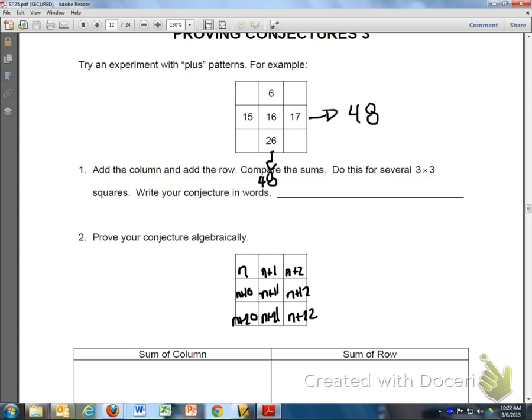It says now prove it algebraically. So on the left side on the next column, on the chart, it says sum of the column. Just pick one of these columns, like this one. Well, you get n plus n plus 10 plus n plus 20. I see a total of three n's, and I get 30.